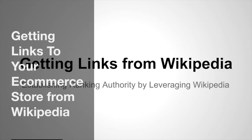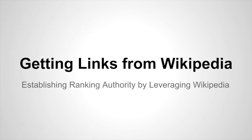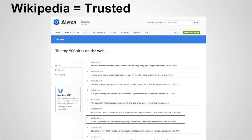Hi, this is Richard Robbins with my 60k store. In this lecture we're going to learn about how to get links from Wikipedia. We want to use Wikipedia to give our site ranking authority because Wikipedia has a lot of authority and is very trusted. As you can see here, this is Alexa's listing of the top 500 websites on the internet. Wikipedia comes in at number seven — really highly trusted, highly authoritative website.